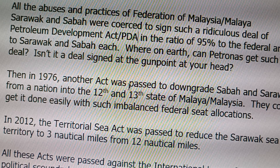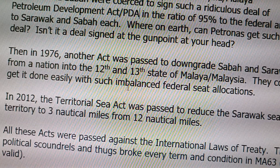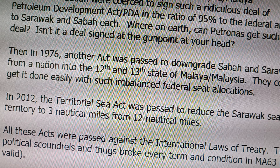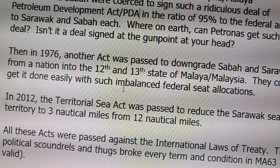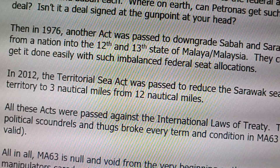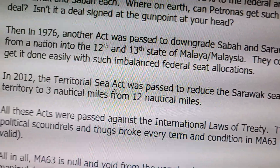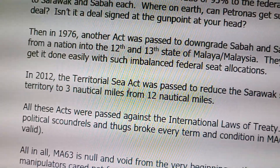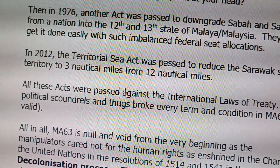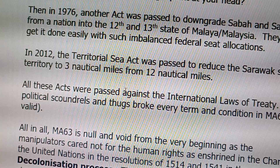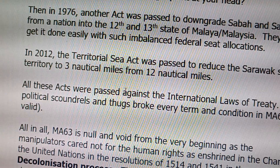Isn't it a deal signed at gunpoint at your head? Then in 1976, another act was passed to downgrade Sabah and Sarawak from a nation into the 12th and 13th state of Malaysia. All right, they could get it done easily with such imbalanced federal seat allocations.